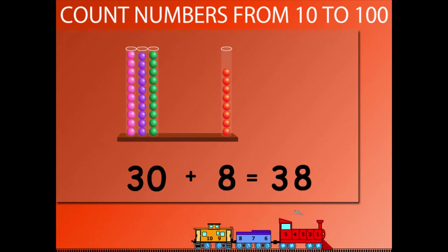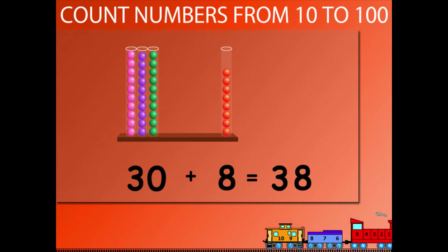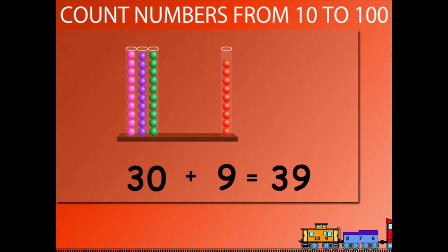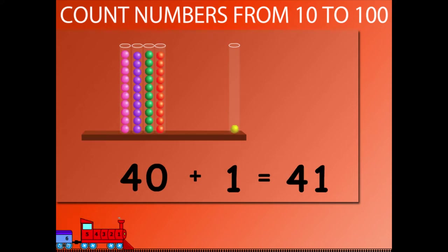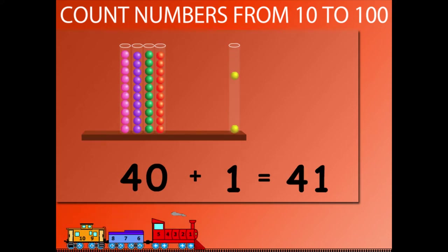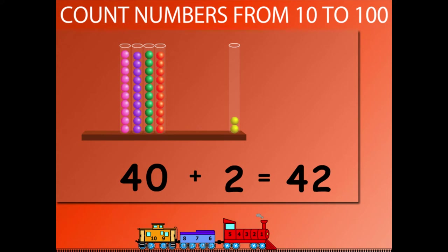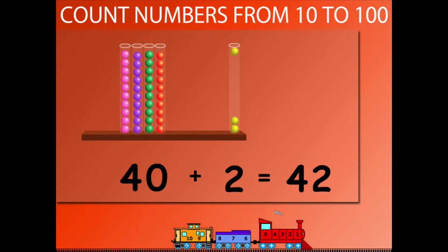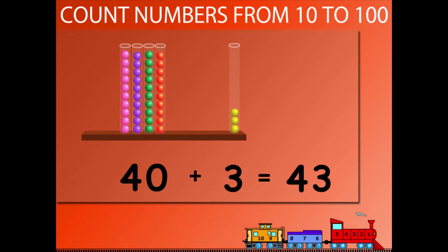30 plus 8 is equal to 38. 30 plus 9 is equal to 39. 30 plus 10 is equal to 40. 40 plus 1 is equal to 41. 40 plus 2 is equal to 42. 40 plus 3 is equal to 43.